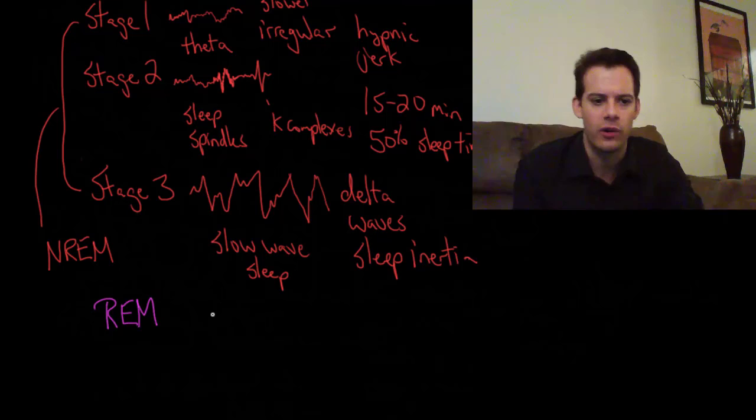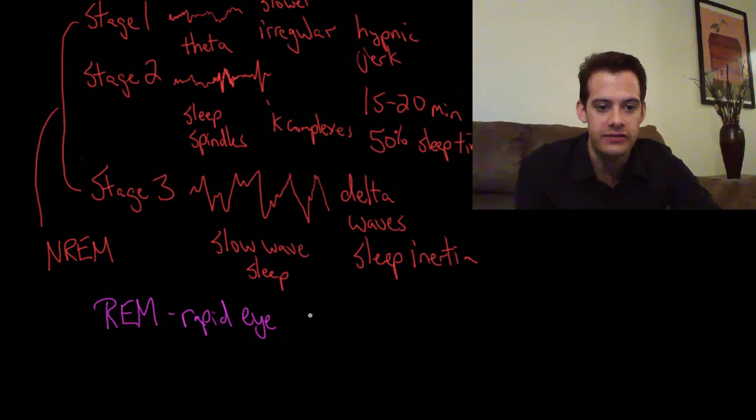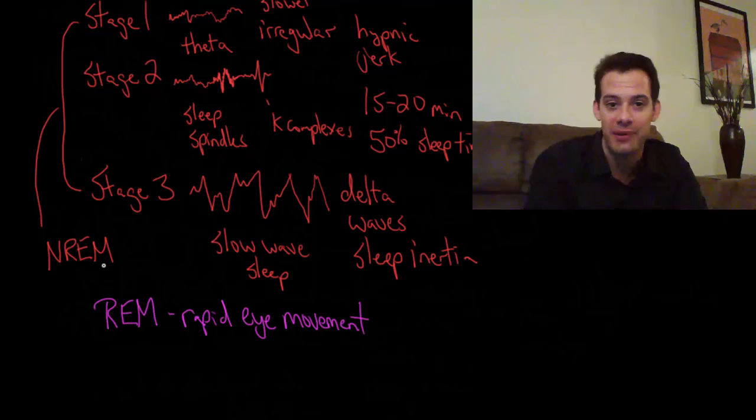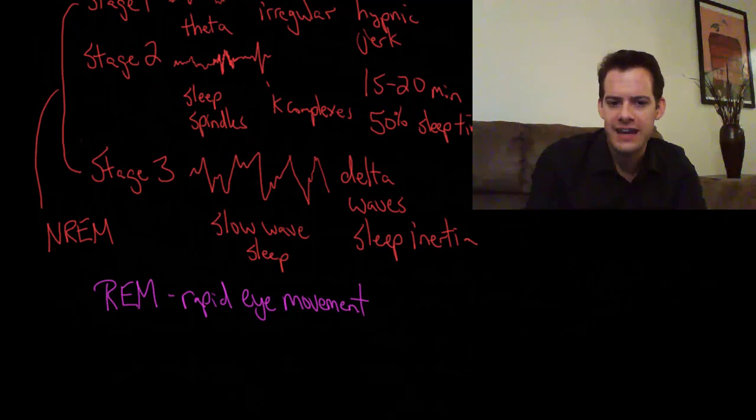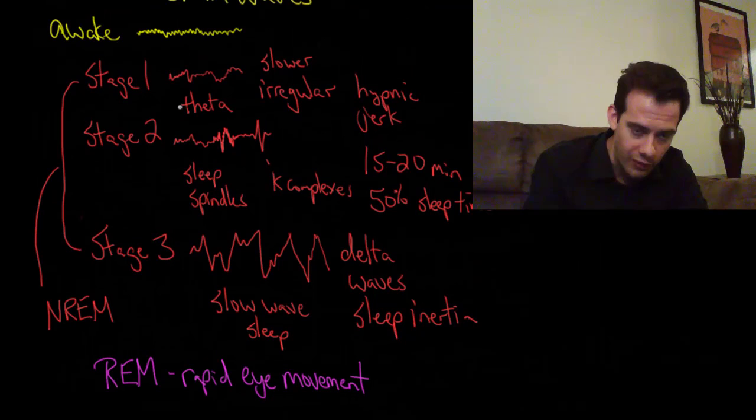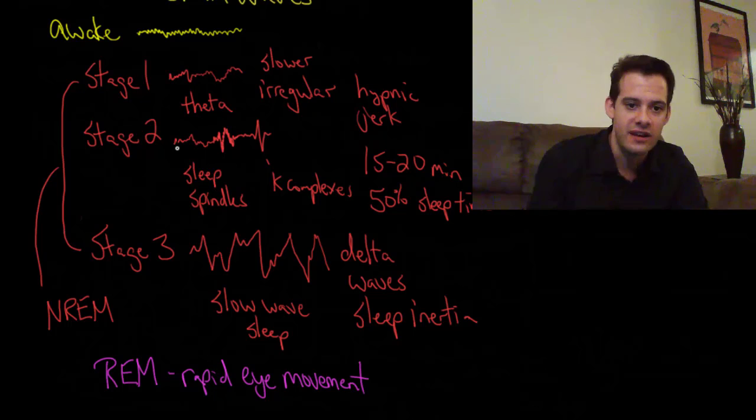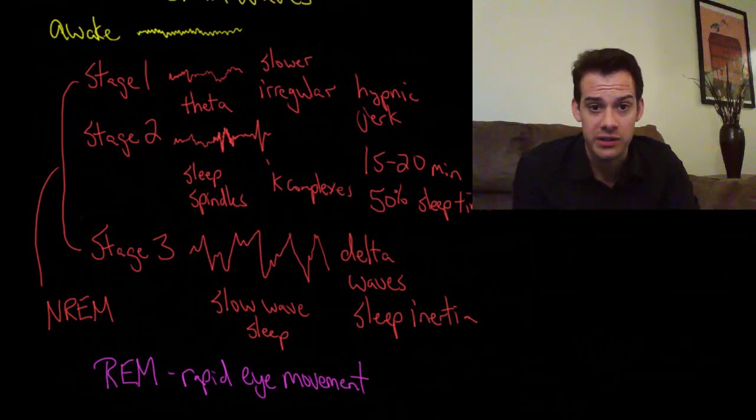So what does this stand for? REM stands for rapid eye movement. That's because in this stage of sleep your eyes start moving around, whereas in the other stages, non-rapid eye movement sleep, you don't see this eye movement. So now we have this interesting stage of REM sleep. So far things have probably made sense in what you might imagine about stages of sleep. The longer you've been asleep, the sort of slower things get. Your brain activity changes and becomes slower and it's sort of a deepening of sleep throughout this process. That probably makes sense to you, but then we get to REM and things are a little weird. This is why REM is also called paradoxical sleep.